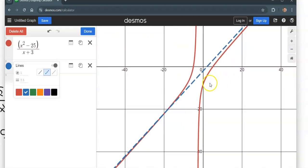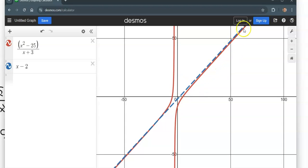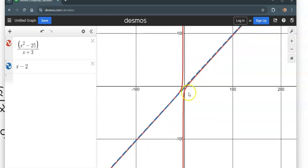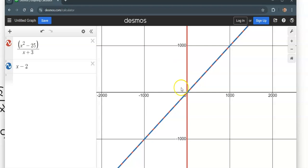And notice as I zoom out, what happens is our function, as X gets really big, gets closer and closer. It starts to become that line. It's not actually that line, but it gets really close to it. If we zoom out far enough, it's hard to tell them apart, with the exception from the up and down part.